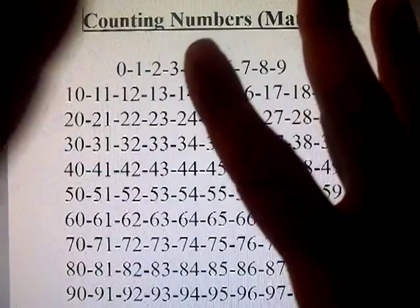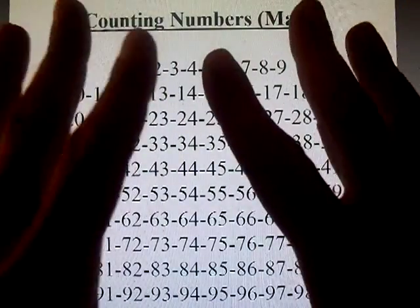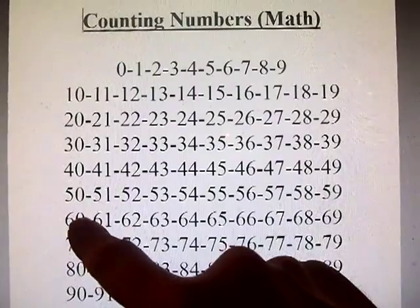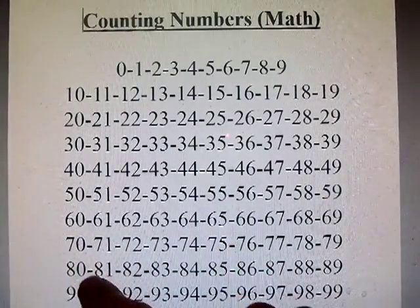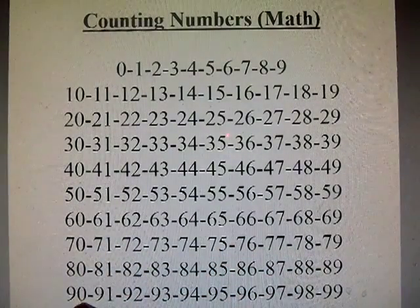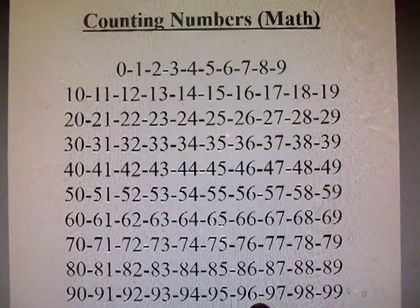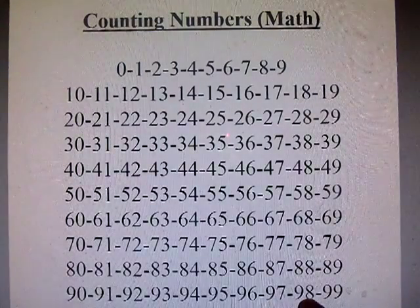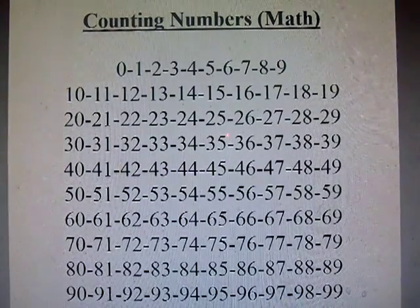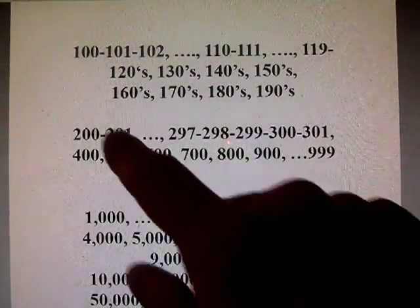So you have 10 fingers, and then you have 10 more, that's 20. So we're counting 10, 20, 30, 40, 50, 60, 70, 80. And then we get all the way up to 89, 90, 91, 92, 93, all the way up to 97, 98, 99. And then if we had one more than 99, that equals 100.